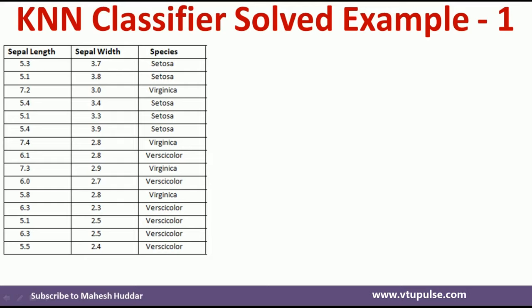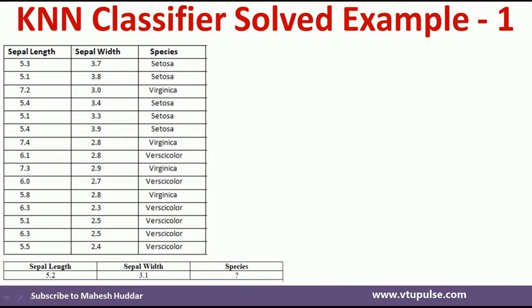Now, given the value of k, we want to classify a new example — sepal length equal to 5.2 and sepal width equal to 3.1 — into one of these species. The value of k may be equal to 1, 2, 3, or 5. We will understand how to classify this new example using the k-nearest neighbor classifier.